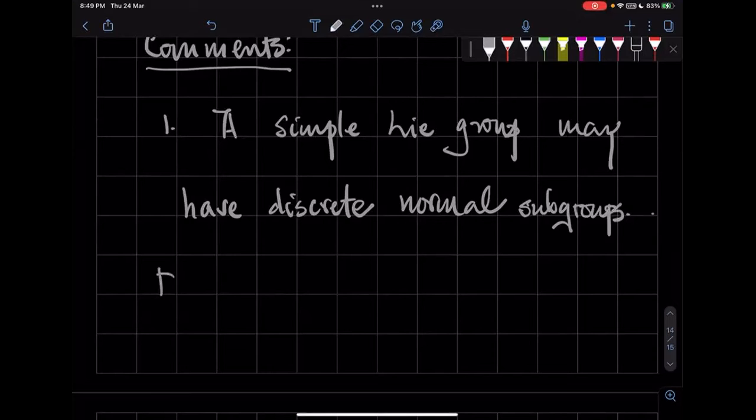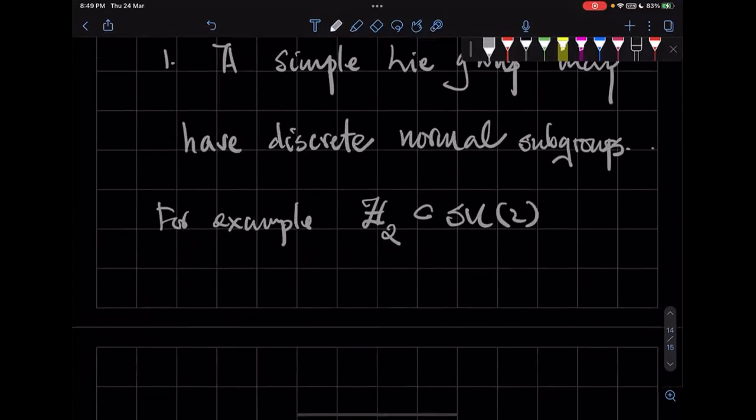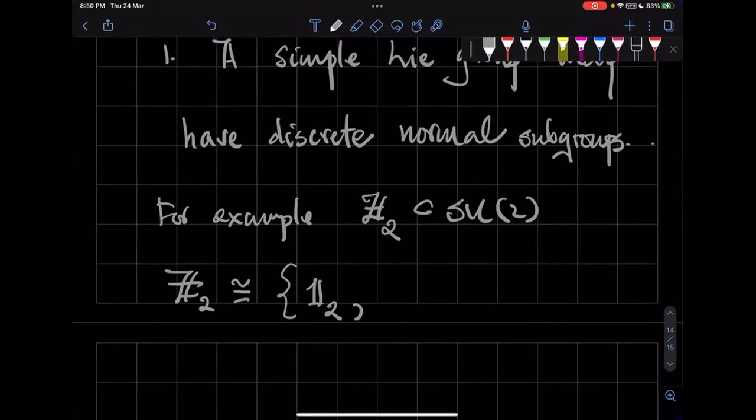So for example, we know that Z2 is a subgroup of SU(2), right? Because Z2 is just generated by the two-by-two identity matrix which is of course an element of SU(2) as well as minus the identity matrix, right?